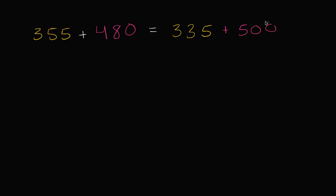And the whole reason why I took away 20 and I added 20 is I said, well, what do I have to add to 480 to get to 500? And I could have done that in my head. I need to add 20. 355 minus 20 is 335. But now, this problem is much, much simpler to compute.